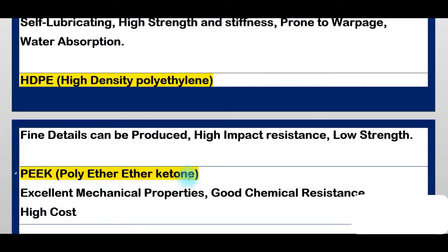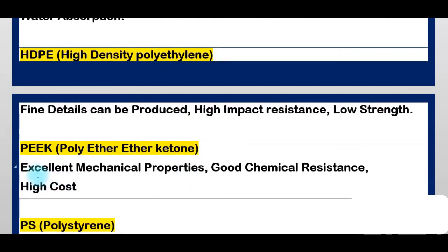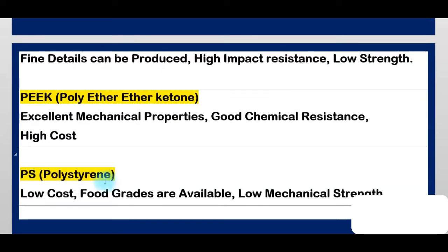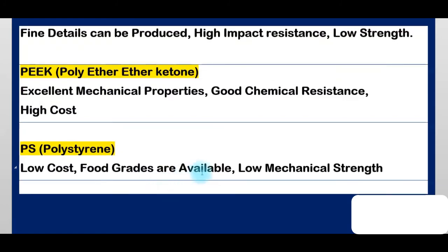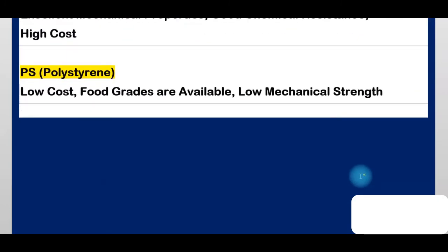PEEK — Polyether-Ether-Ketone. Properties: excellent mechanical properties, good chemical resistance, but high cost. Next is PS — Polystyrene. Properties: low cost, food grade also available, but low chemical strength.